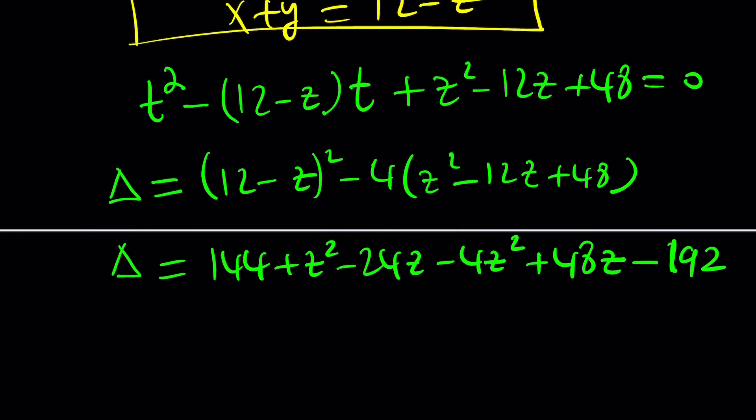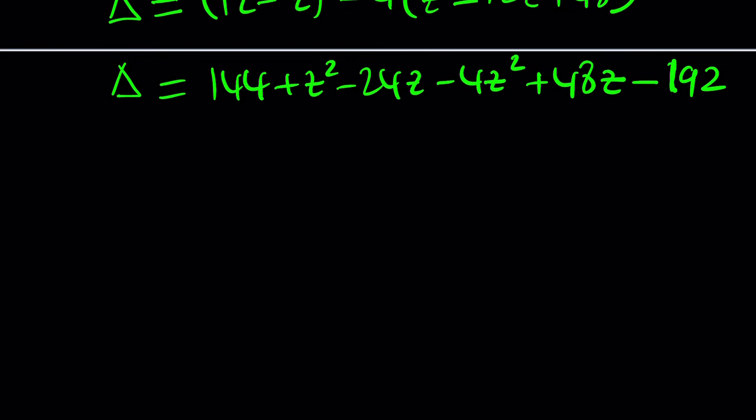Delta is going to be 144 plus z squared minus 24z minus 4z squared plus 48z minus 192. 4 times 48. Now from here we get a negative term, negative 3z squared, and then plus 48z. 48 minus 24, that's going to be a plus 24z. They are like terms. And then finally 144 minus 192 is supposed to be minus 48. And we want delta to be greater than or equal to zero. Of course. You want real solutions, don't you? Of course.